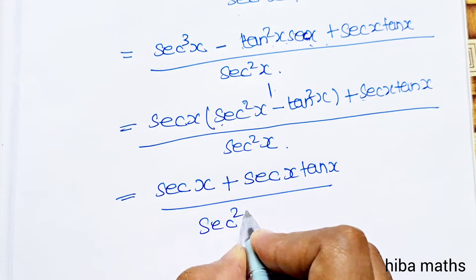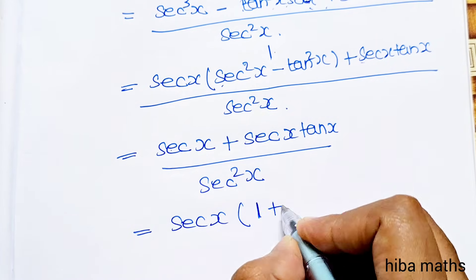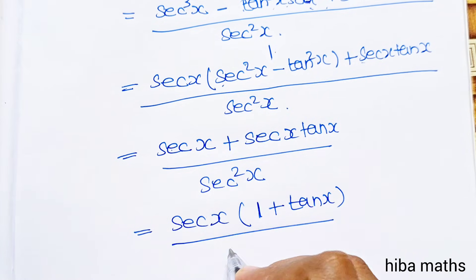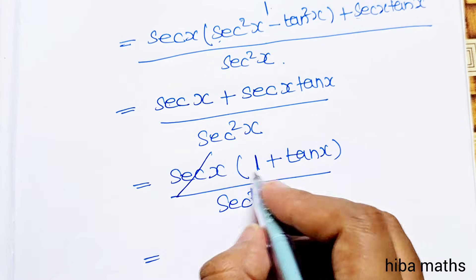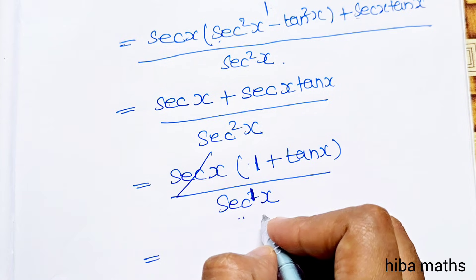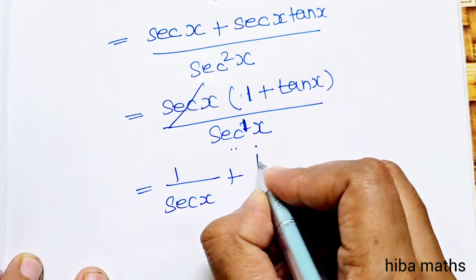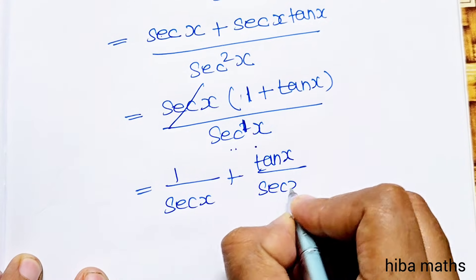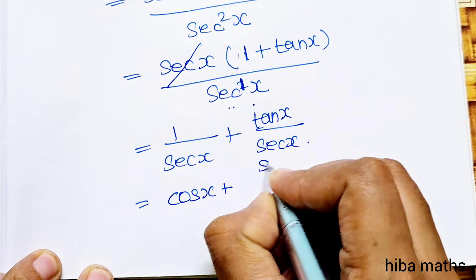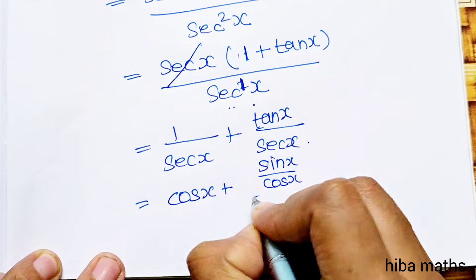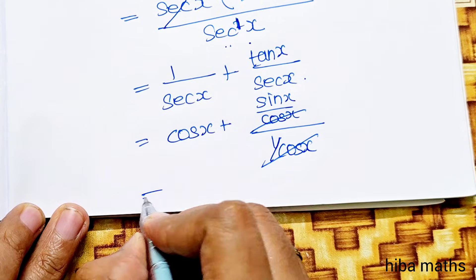Divided by sec²x. Simplifying: (1 plus sec x·tan x) divided by sec²x. This gives 1/sec x plus tan x/sec x. Since 1/sec x equals cos x, and tan x/sec x equals tan x times cos x which equals sin x. So the answer simplifies to cos x plus sin x.